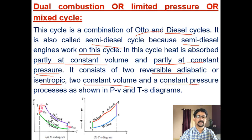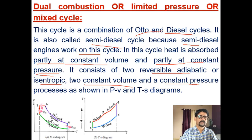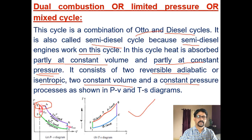Expansion and compression are isentropic as usual, and heat rejection is also at constant volume as usual. The only difference is the heat addition, which has two parts: constant volume as well as constant pressure. You can see the T-S diagram here; 1 to 2 is the isentropic compression shown by the green line.